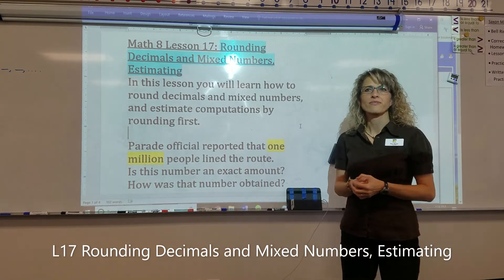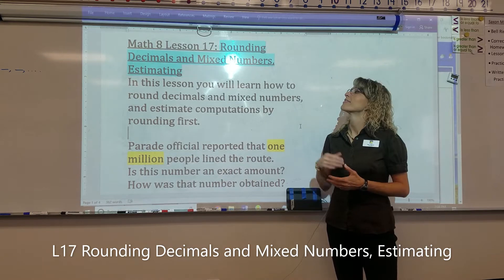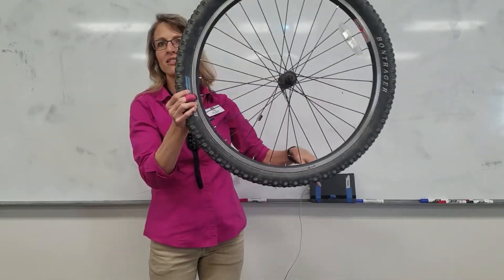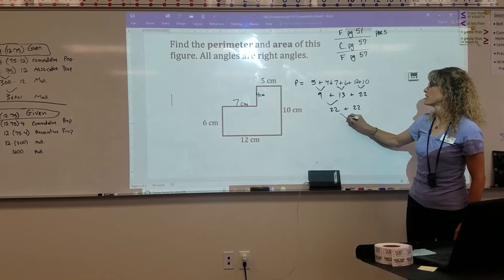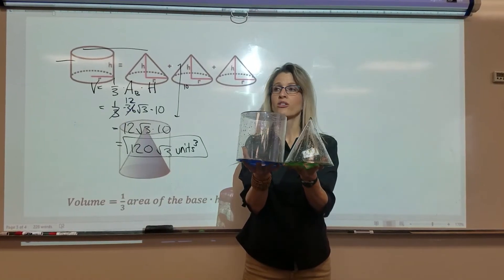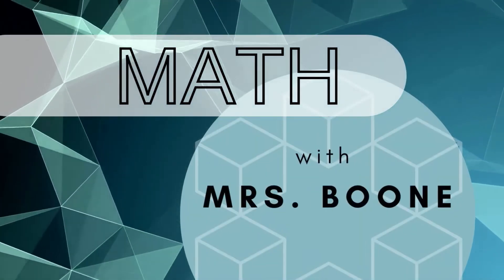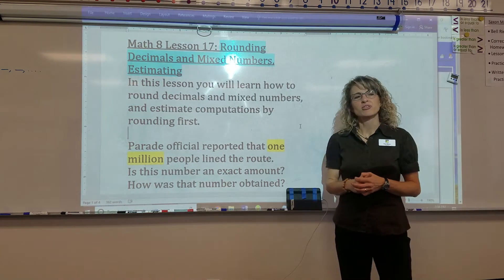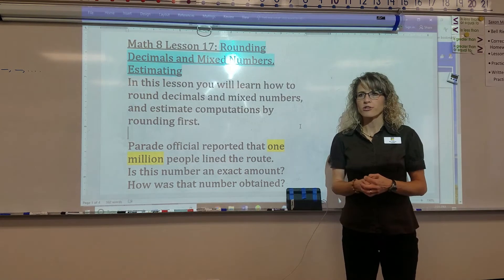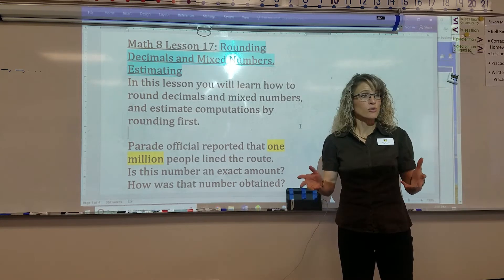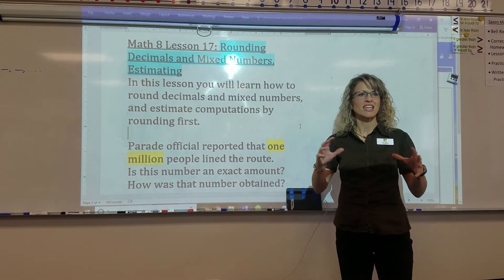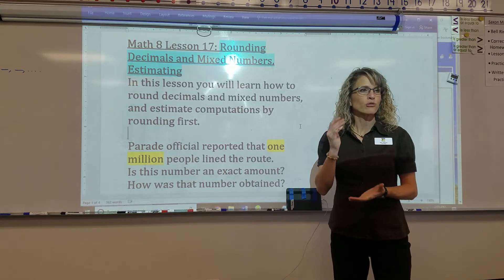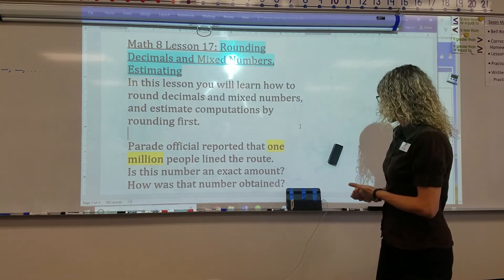What's our objective class? Rounding decimals and mixed numbers, and estimating. In this lesson, you will learn how to round decimals, mixed numbers, and estimate calculations by rounding first. So a lot of you are thinking, I already know how to round. Not everybody in the class knows how to round. So I'm going to teach it, and make sure that by the end of class, you can round to the fourth digit in a decimal, you can round to the hundred-thousand place, and you can round a mixed number like 13 and a half.